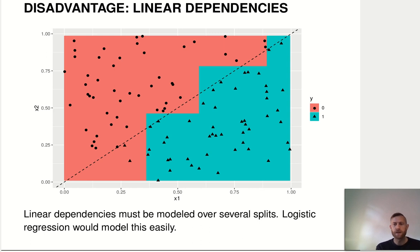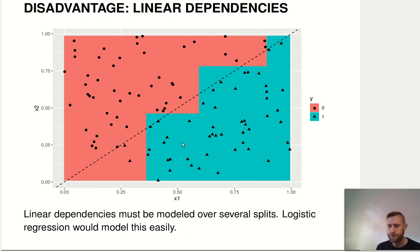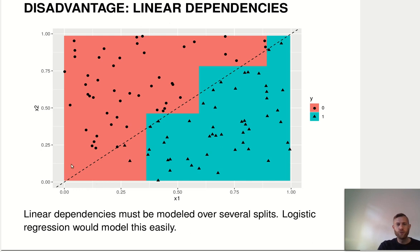Because trees split up the feature space into rectangular regions parallel to the axes, trees have a hard time modeling things that are linear in the features. In this synthetic example, you could make a very simple decision rule and say everything above the line is a circle and everything below the line is a triangle. But in order to get such a diagonal line with a step function, that requires a lot of steps.